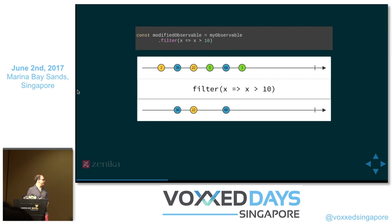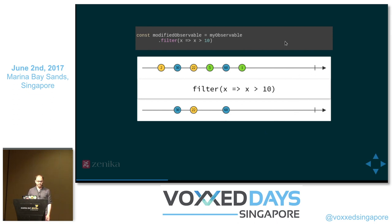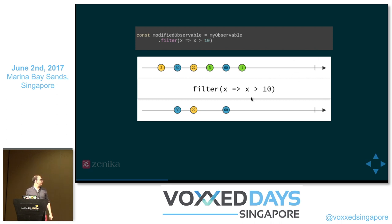The first one is the filter operator, which you have already seen. It's probably familiar if you do functional programming. As you can see, the result observable emits the same events as the source observable, but only if they satisfy the predicate you gave the operator. On these kinds of diagrams — called marble diagrams — you have the source observable on the top, the operator in the middle, and the result observable at the bottom.